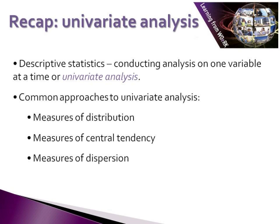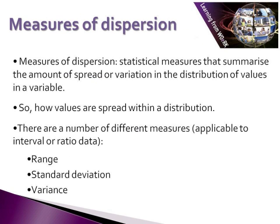In the last lecture we had a look at measures of central tendency, and in this series of slides we are going to look at the third common approach to univariate analysis — measures of dispersion. So what do we mean by measures of dispersion? It is really a statistical way of measuring the amount of spread or variation in a distribution of values, looking statistically at how values are spread within a particular distribution in a variable.